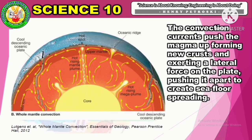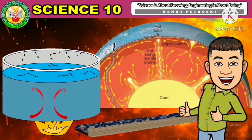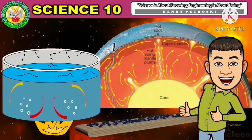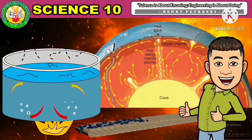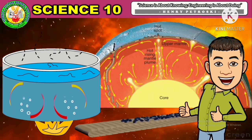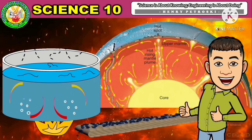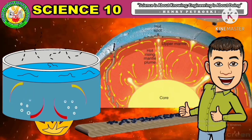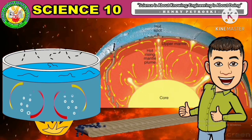Now that you understand what happens inside the Earth and its effect on the Earth's lithosphere, you should realize that tectonic activities on the Earth's surface are inevitable. Mantle convection is the driving mechanism for plate tectonics — it occurs because of the heat produced in the core. The convection currents rotate very slowly and drag the plates along. Because of convection currents, the tectonic plates move slowly along the boundaries: pushing each other, sliding past each other, and drifting away from each other.